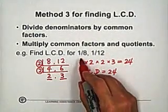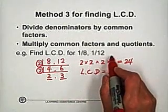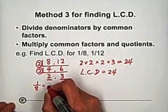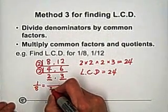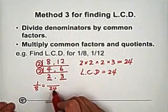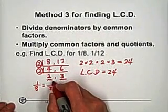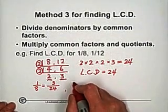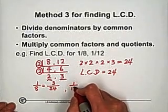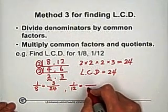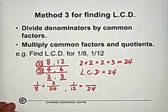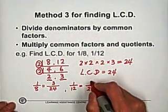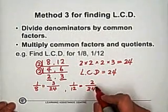Now convert 1 over 8 and 1 over 12 to equivalent fractions with common denominator 24. For 1 over 8: the denominator goes from 8 to 24 by multiplying 3, so multiply 3 on top too — giving 3 over 24. For 1 over 12: 12 times 2 equals 24, so multiply 2 on top — giving 2 over 24.